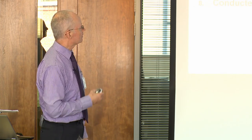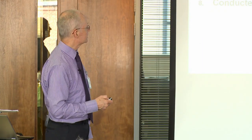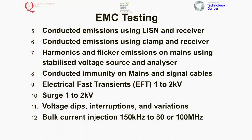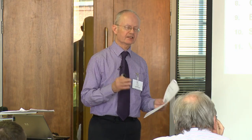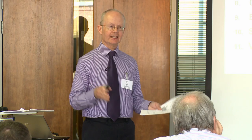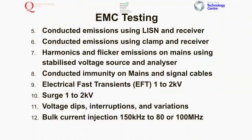Radiated immunity covers 80 MHz to 1 GHz, or now up to 2.5 GHz, using an anechoic chamber, signal generator, power amplifier, field probe to measure, and a camera to monitor what's happening. Electrostatic discharge goes up to 8,000 volts, stepped up in sequence, with two types: contact discharge and air discharge. Power frequency magnetic field testing is only done if there's likely to be a susceptibility. Conducted emissions use a LISN and receiver, or a clamp and receiver.